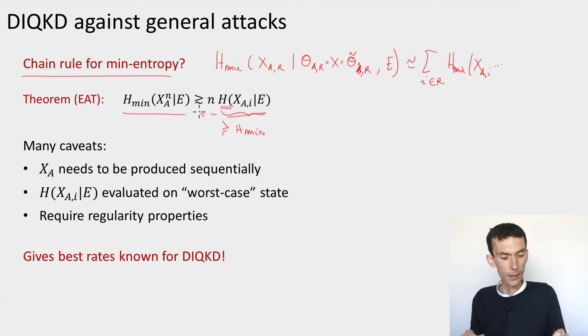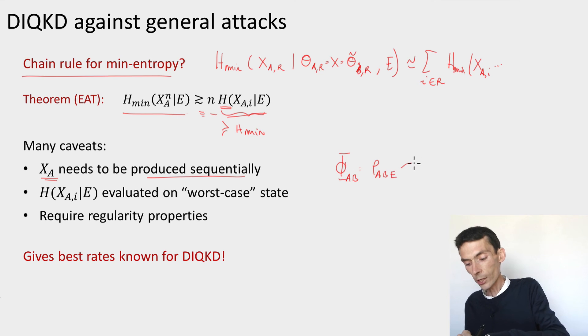One of the most important conditions is that the outputs X_A are produced using a certain sequential process, and this needs to be modeled explicitly in order to be able to apply this theorem. So you need to model each step in the protocol as a channel. It's a little channel, Φ_AB, that takes as input the current state of the devices, ρ_AB, and there's also the eavesdropper here, E, and what the channel outputs is it outputs a post-measurement state, ρ' ABE, and it also outputs the outputs that have been produced at this stage, and you could also say that it records the basis choices.